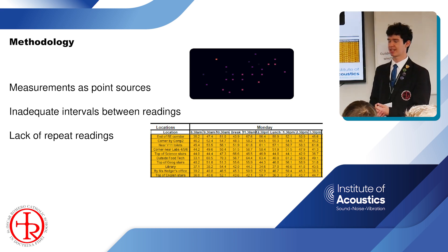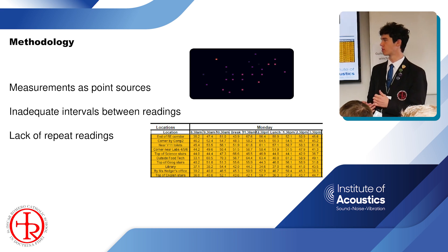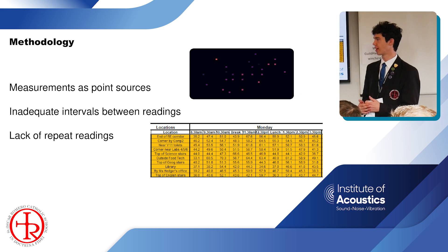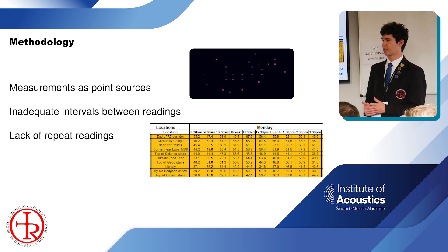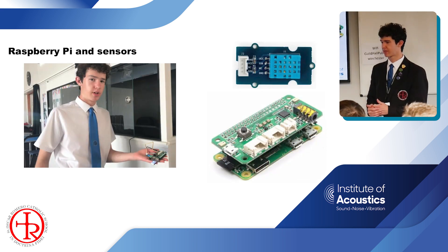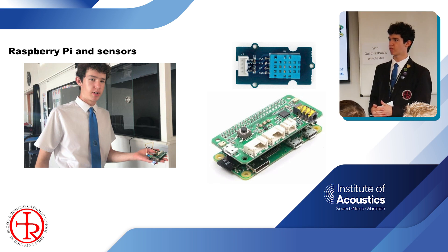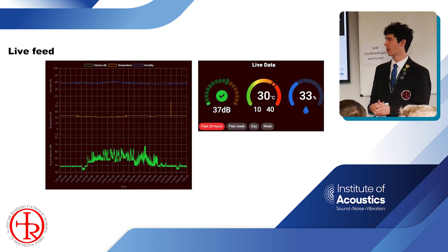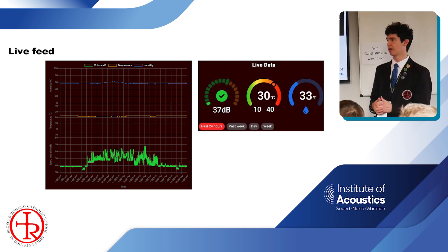If we were to take multiple readings each time across multiple weeks and calculate a mean, this would reduce the effect of these random errors. We wanted a way of recording sound at shorter intervals, so we decided that a Raspberry Pi would be the way ahead. We set up the Pi with temperature, humidity, and sound level sensors, and it records these every three seconds and broadcasts them to the Competition Entry website, essentially giving us the means of continually monitoring the sound in one area.